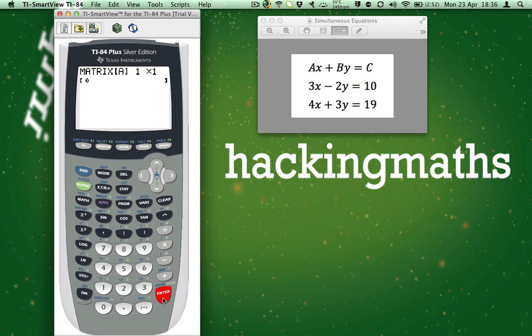As there are two equations, we need to tell the calculator that there are two rows. So we type 2 and press Enter for the number of rows. We then type 3 and press Enter to tell the calculator that there are three columns.